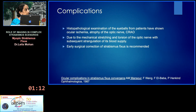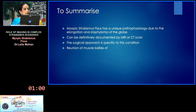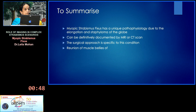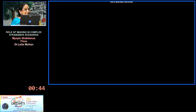There are some complications: histopathological examination of eyeballs from patients has shown ocular ischemia, optic nerve atrophy, and CRA occlusion due to mechanical stretching and torsion of the optic nerve with subsequent strangulation of blood supply. Early correction of strabismus fixus is therefore recommended. To summarize: myopic strabismus fixus has a unique pathophysiology due to elongation and staphyloma of the globe, can be definitively documented by MRI or CT scan, and reunion of muscle bellies gives good results.